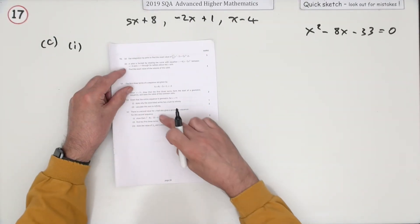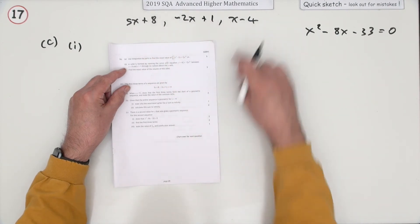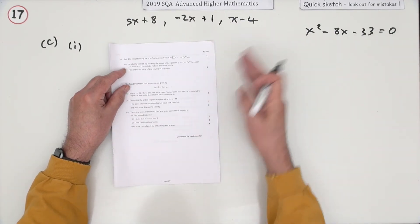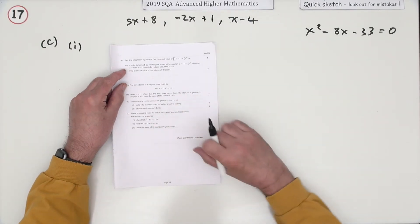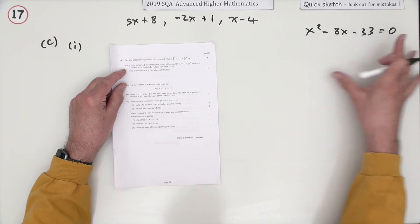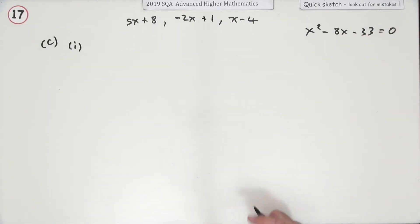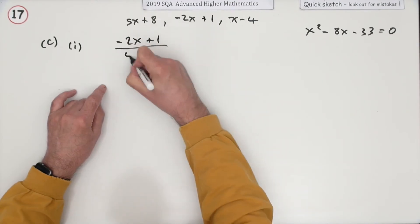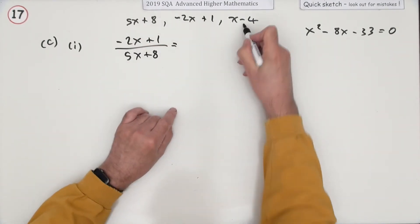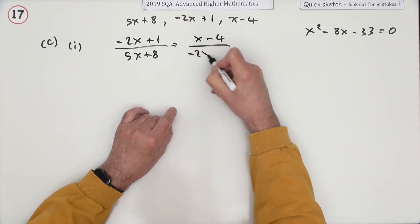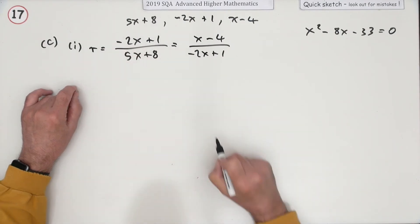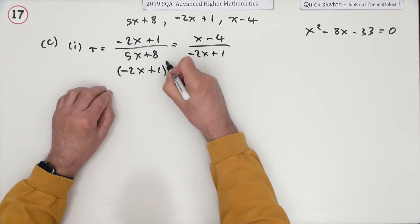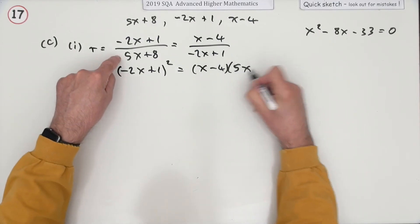Part C: there is a second value of x which also creates the start of a geometric sequence. Find the first three terms and then a certain sum. If the sequence is geometric, the ratio of consecutive terms must be equal: so (negative 2x + 1) over (5x + 8) must equal (x minus 4) over (negative 2x + 1). Cross-multiplying gives (negative 2x + 1) squared equals (x minus 4)(5x + 8).